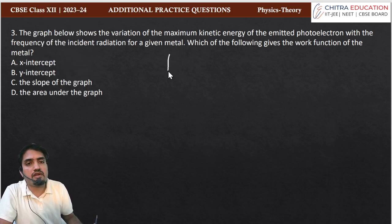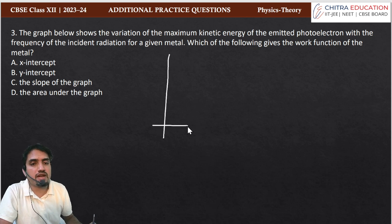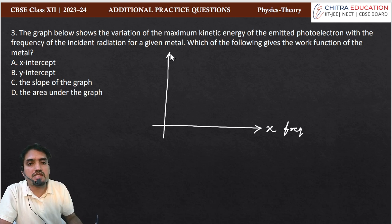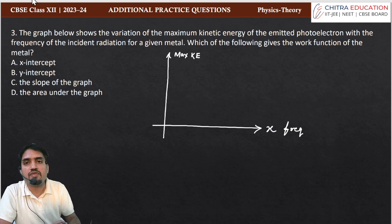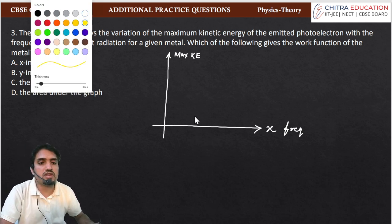If we have here y-axis, we have here x-axis. The x-axis has frequency given and y-axis has maximum kinetic energy given. And how is the graph given? The graph is something like this.